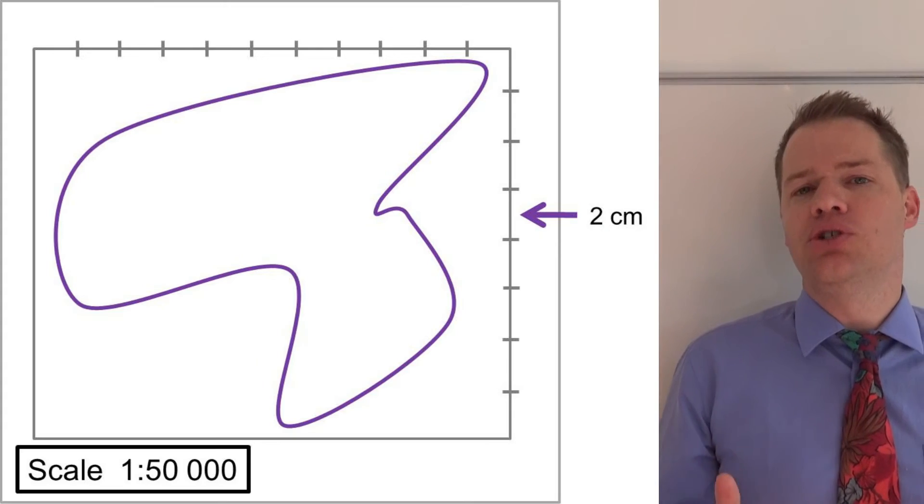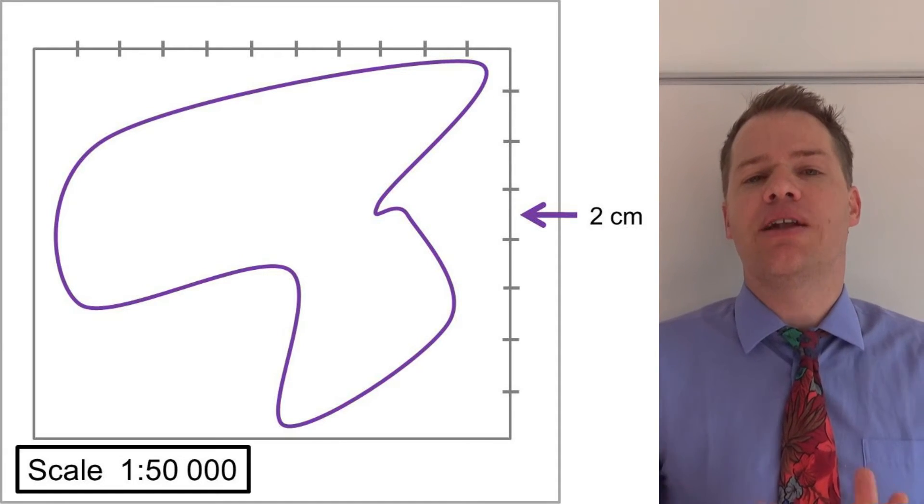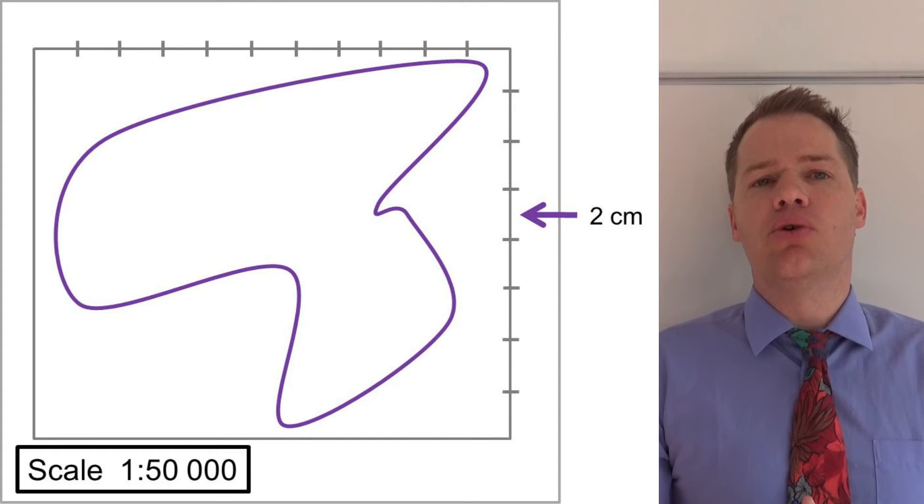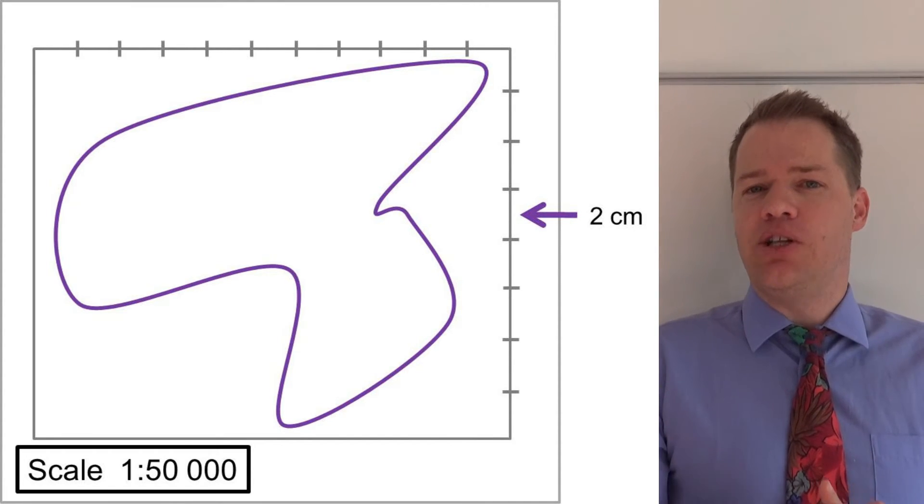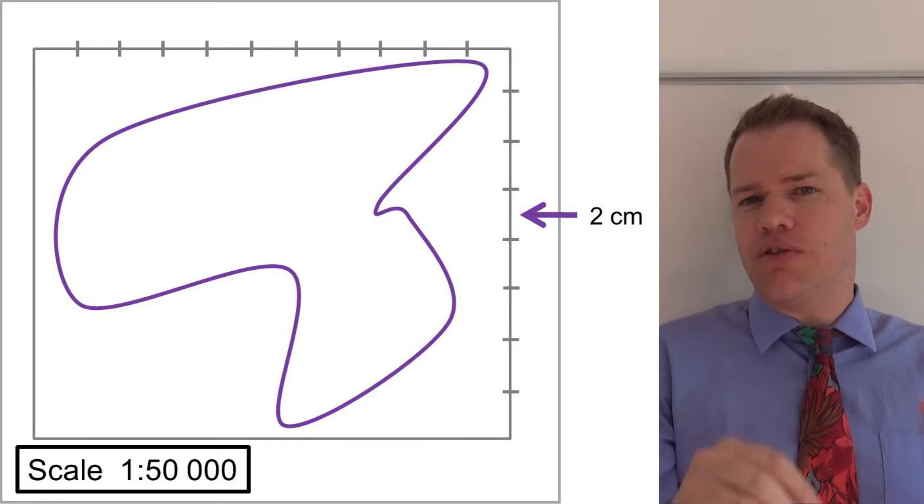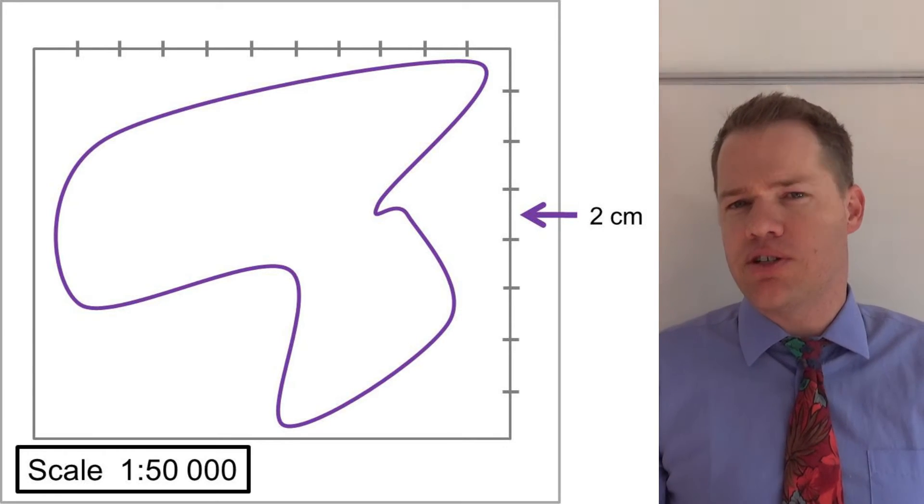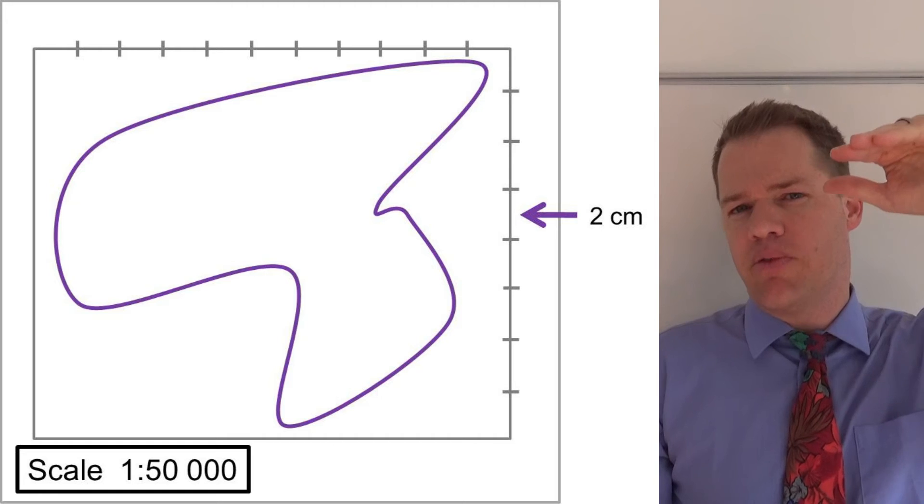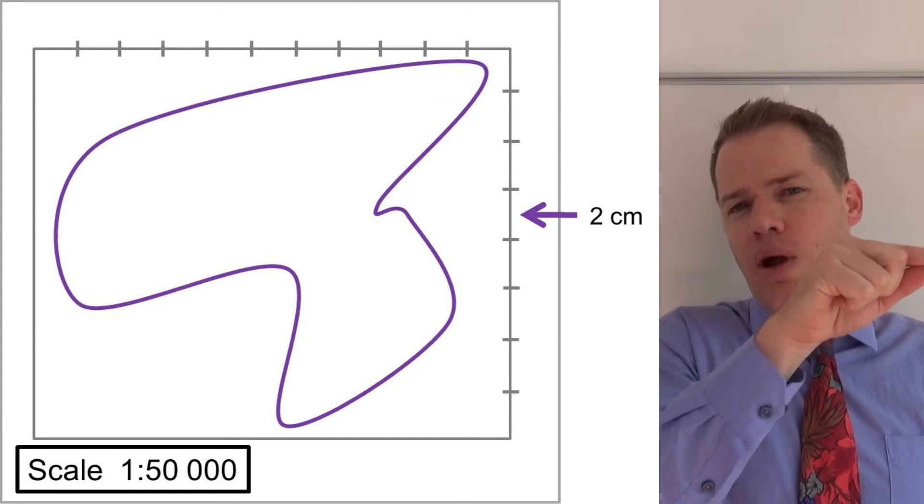So each side of your square which makes up the whole grid should be two centimeters long. So now you are going to use your ruler, draw up your grid, but you have to measure two centimeters. So if you go to the top of the page, for example, to the top of your shape, you're going to draw a line and then mark two centimeters along that line.